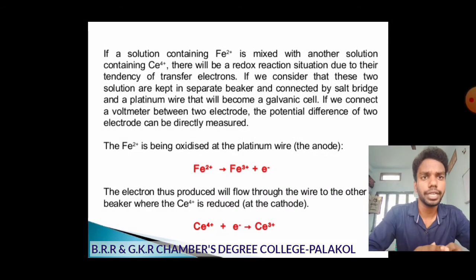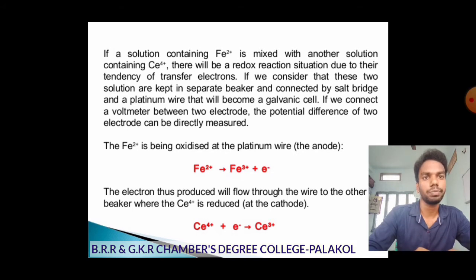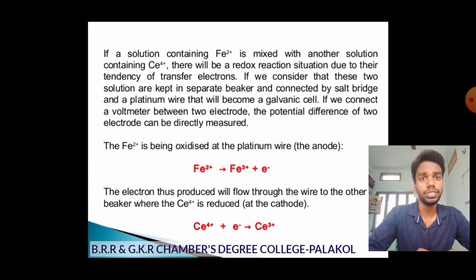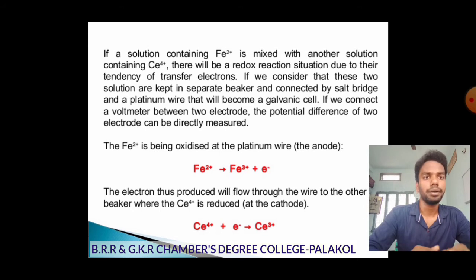Here is an example: if a solution containing Fe²⁺ is mixed with a solution containing Ce⁴⁺ (cerium ammonium sulfate), there will be a redox reaction due to their tendency of electron transfer. If these two solutions are kept in separate beakers connected with a salt bridge and platinum wire, this becomes a galvanic cell — chemical energy is converted into electrical energy. Electrons are transferred and a voltmeter can measure the potential difference.